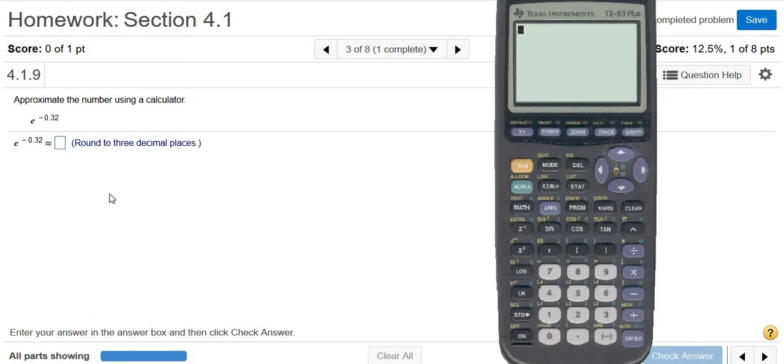Approximate the number using a calculator. So we have e to the negative 0.32.